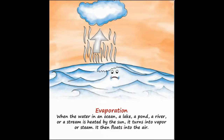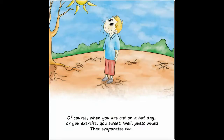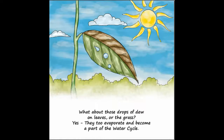Evaporation. When the water in an ocean, a lake, a pond, a river or a stream is heated by the sun, it turns into vapor or steam and then floats into the air. Of course, when you are out on a hot day or you exercise, you sweat — and guess what? That evaporates too. What about those drops of dew on leaves or the grass? Yes, they do evaporate and become a part of the water cycle.